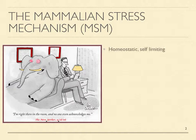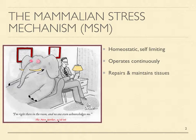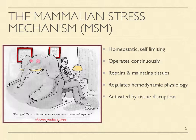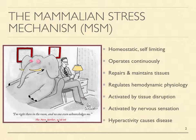The mammalian stress mechanism is the veritable elephant in the living room of medicine. I call it the MSM for short. It is the homeostatic self-limiting physiological mechanism that continuously maintains and repairs tissues and regulates hemodynamic physiology in mammals. It optimizes the internal cellular environment and maintains complex multicellular structures. It is essential for life, activated by combinations of tissue disruption and nervous sensation, and its hyperactivity causes the symptoms and manifestations of disease.